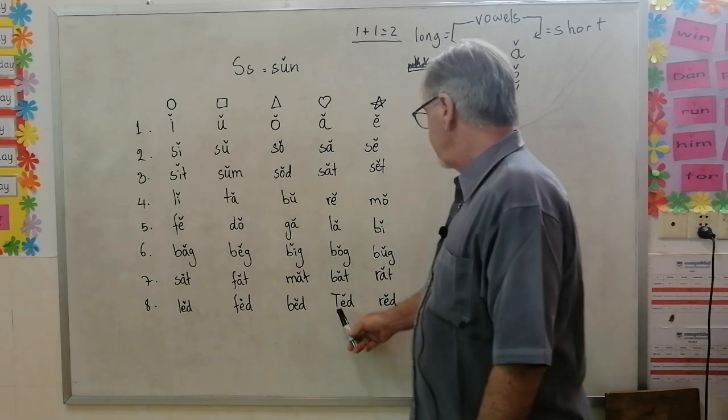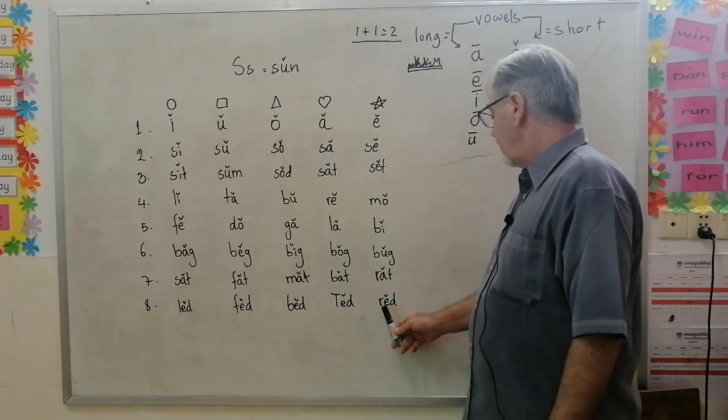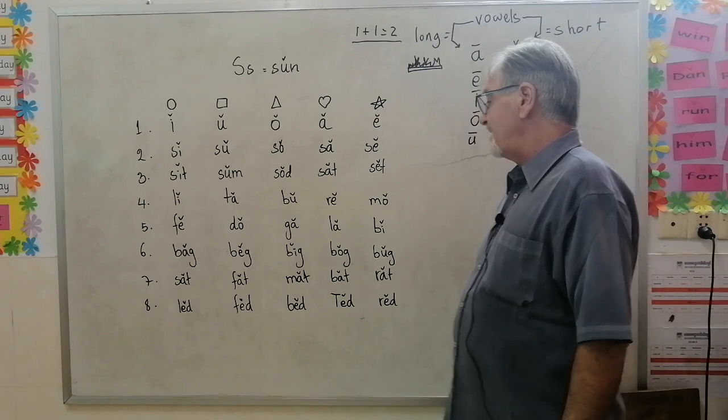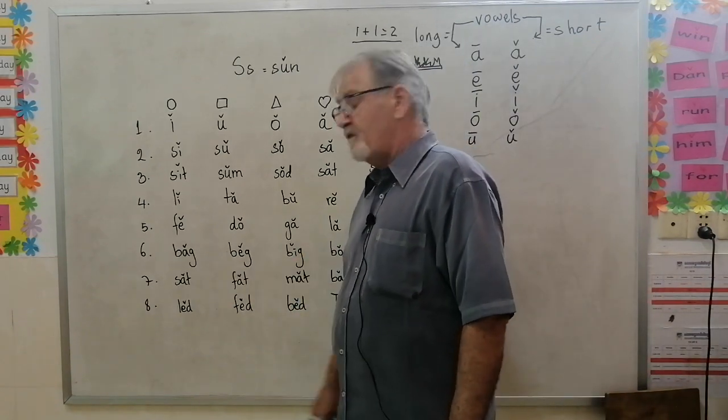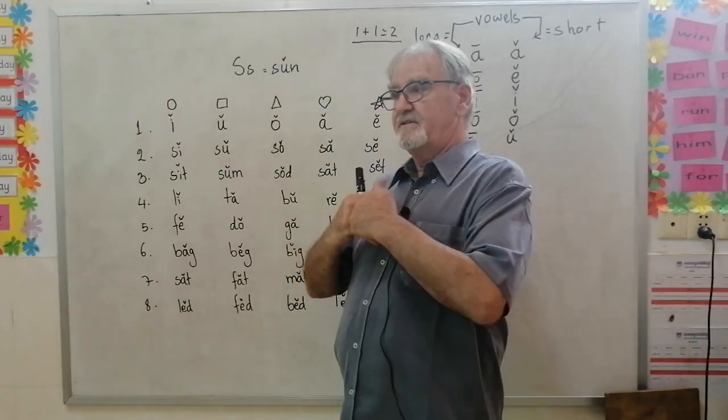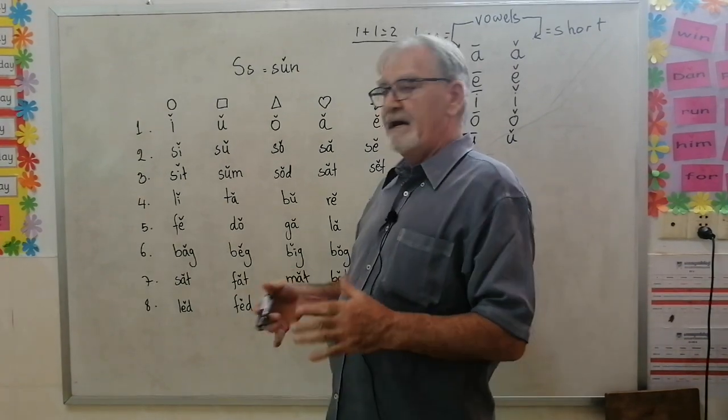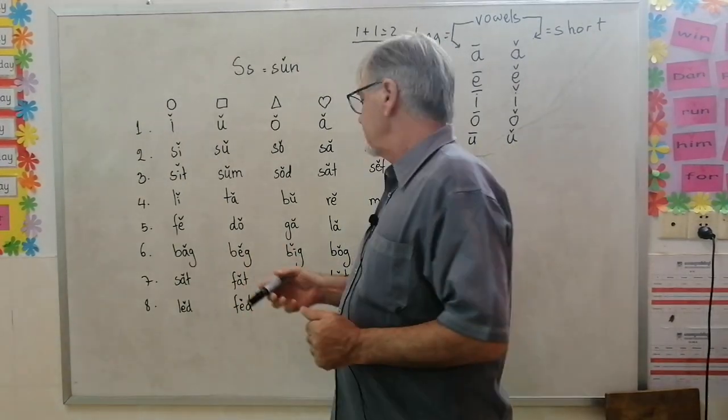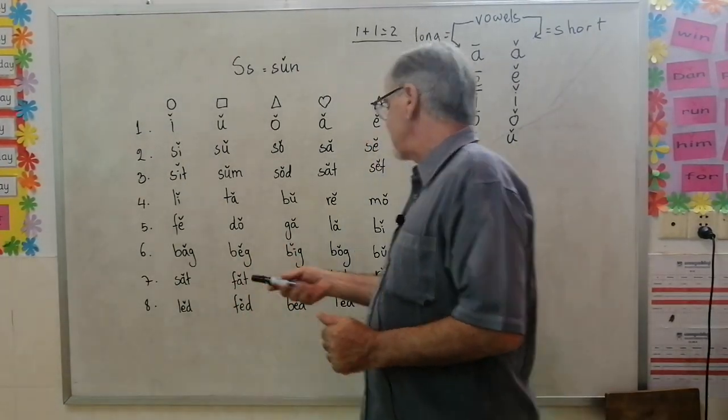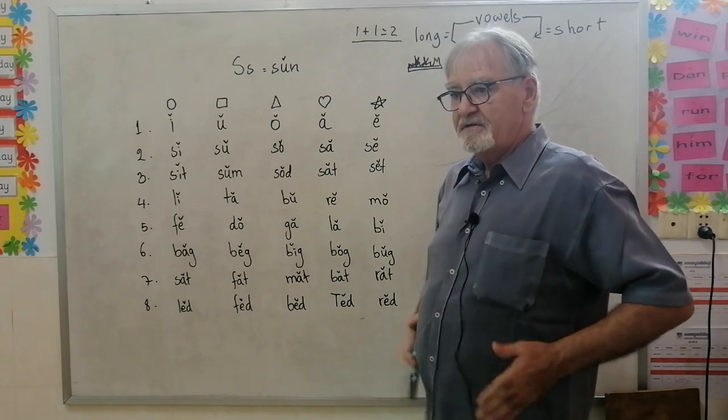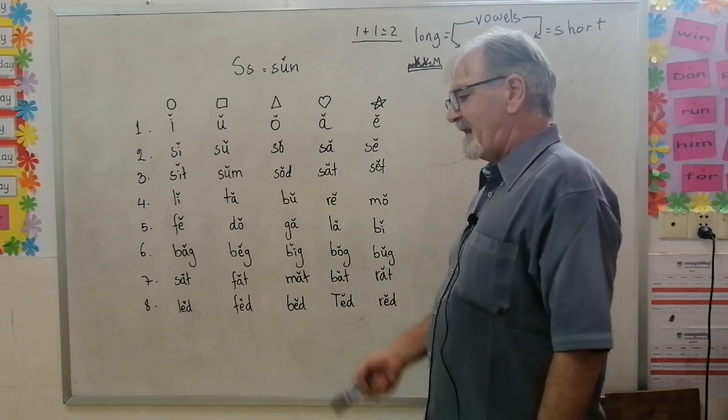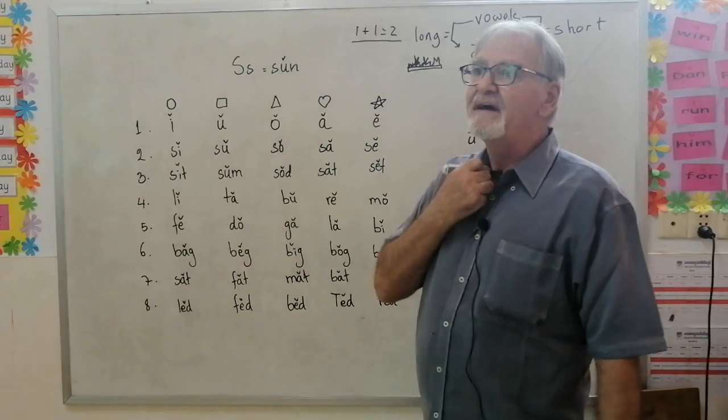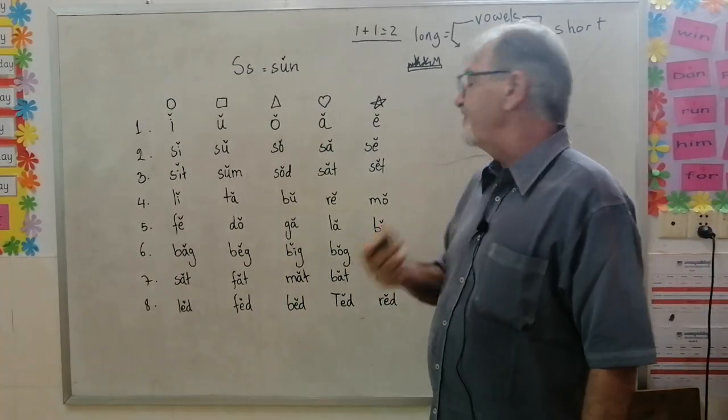Sat we have already told you - it's past tense. Fat means like me. Mat is something that you have outside your door to wipe your feet on.